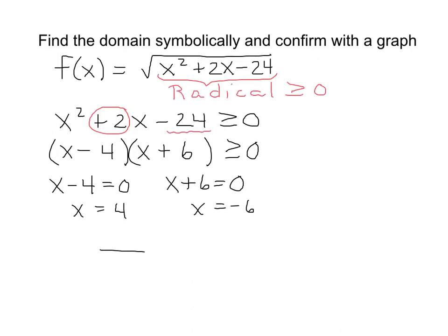So what this is saying, if we draw a number line, here's -6, the smaller of the two numbers, and here's 4. So those two numbers break the number line into three separate intervals. Numbers less than -6, numbers between -6 and 4, right here, and then numbers greater than 4.